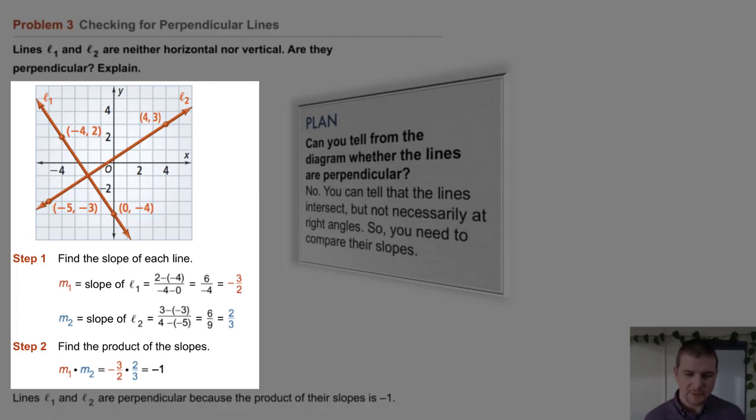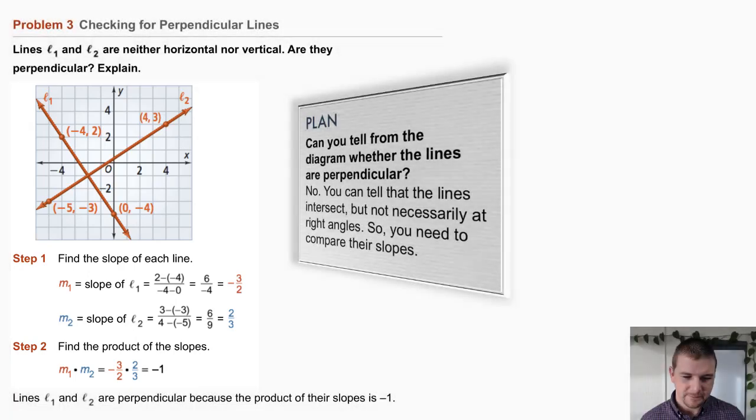Now we have to find the product of the slopes. So we multiply them. Negative 3 halves times 2 thirds equals negative 1. So lines L1 and L2 are perpendicular because the product of their slopes is negative 1.